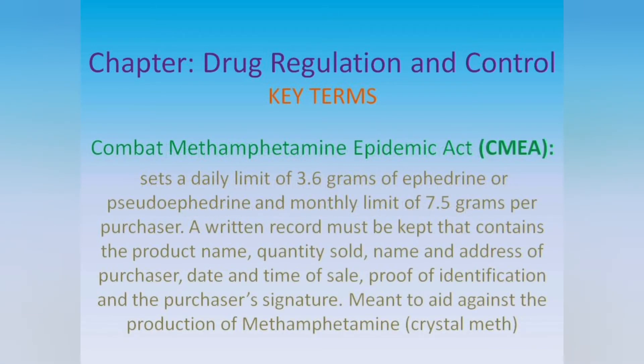Combat Methamphetamine Epidemic Act, or CMEA. Sets a daily limit of 3.6 grams of ephedrine, pseudoephedrine, or phenylpropanolamine and a monthly limit of 7.5 grams per purchaser. A written record must be kept that contains the product name, quantity sold, name and address of purchaser, date and time of sale, proof of identification, and the purchaser's signature. Meant to aid against the production of methamphetamine or crystal meth.